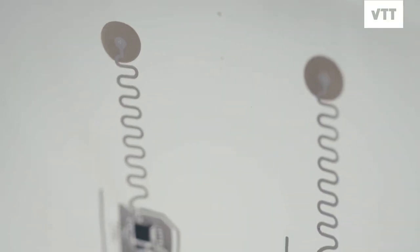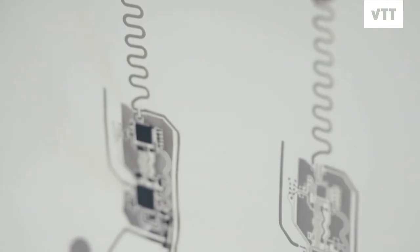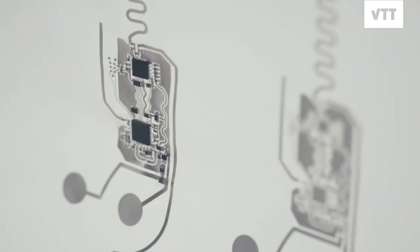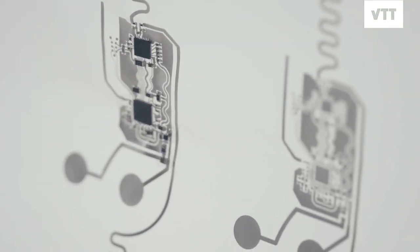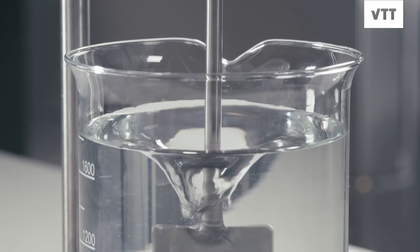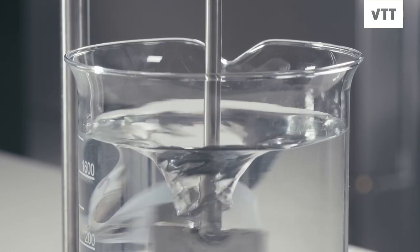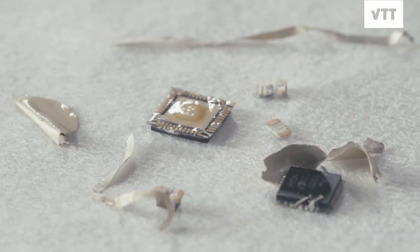And best of all, the precious metals used in the electronic components, the printed silver, for example, is fully recoverable. Basically, you could recover all your electronic components that are printed on the film or attached to the film by basically repulping the film in water and getting your electronics component cleanly back.